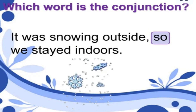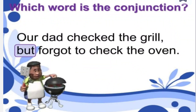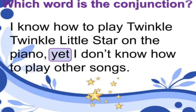Example: 'It was snowing outside, so we stayed indoors.' 'So' connects both sentences — we use 'so' to introduce the consequence or result of something. The second part of the sentence is the result of the first part. Example: 'It was cold, so I turned on the heating.' Next: 'Our dad checked the grill but forgot to check the oven.' We use 'but' for adding contrasting information.